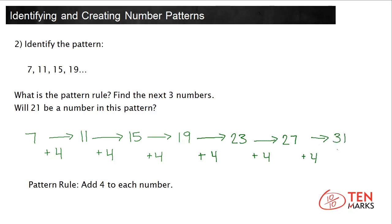The next three numbers are 23, 27, and 31. As you can see from the pattern, 21 will not be a number in this pattern because 23 comes right after 19.